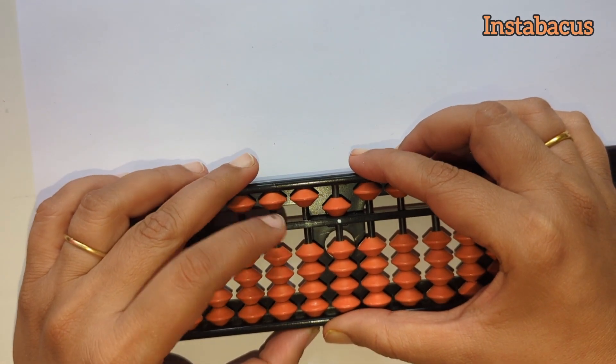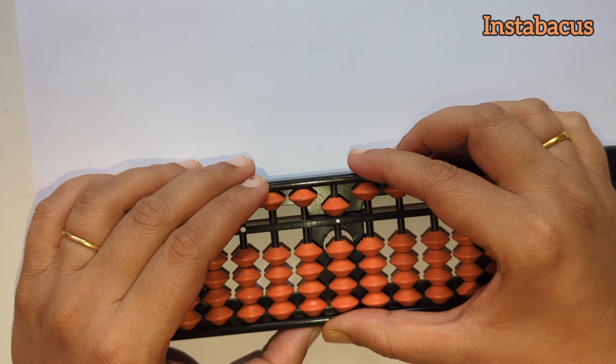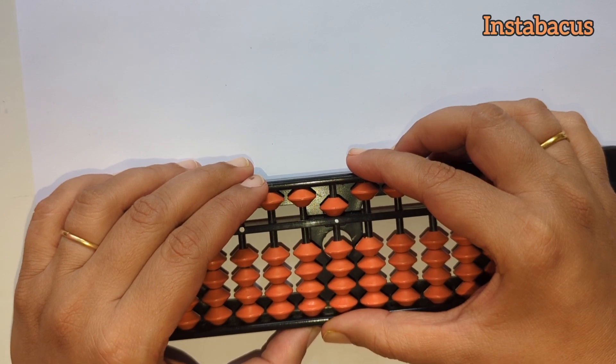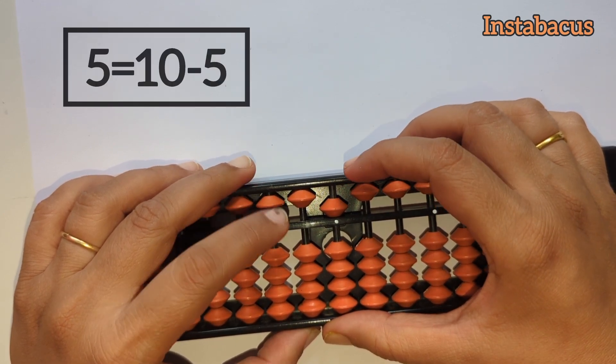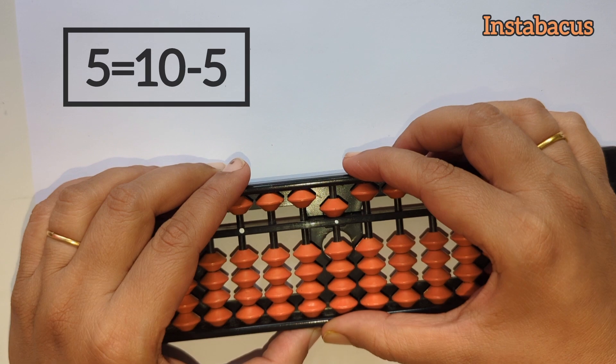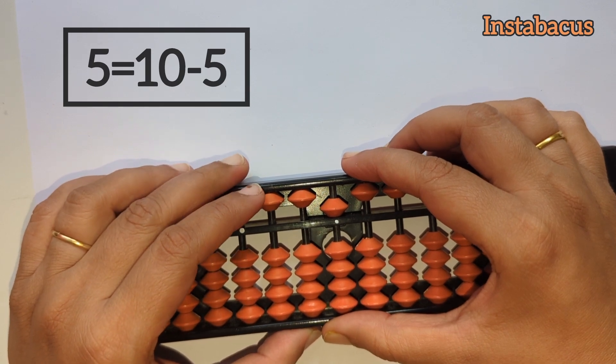And now to add five again, we are going to use our big friend. Plus five—we cannot add one more five directly, so hence plus five is plus ten minus five.